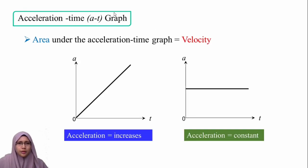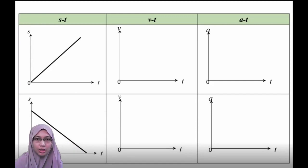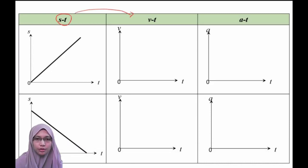For the acceleration-time graph, the area under the acceleration-time graph equals velocity. If the acceleration is increasing, it can be read from the graph accordingly. To have a clear understanding, let's look at how the displacement-time graph is converted into the velocity-time graph, and then translated into the acceleration-time graph.